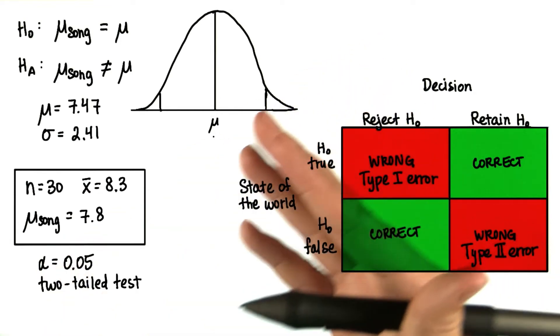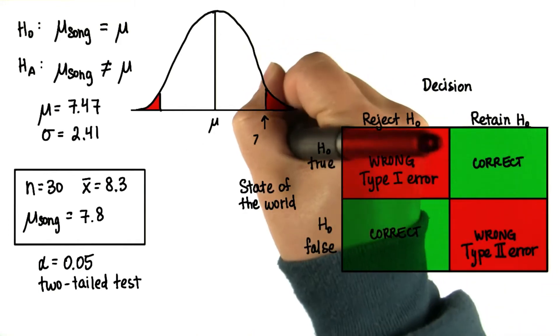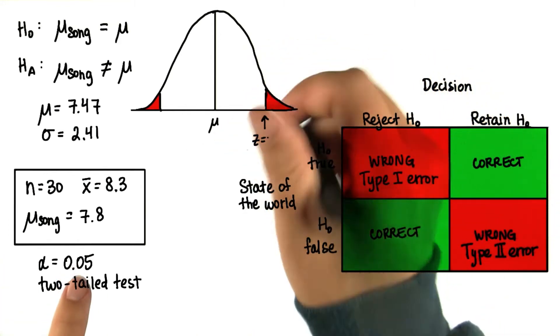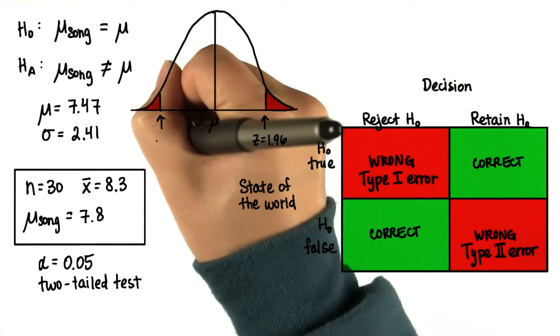We decide it's significantly different if it falls in the critical region. Remember that the z-score here for an alpha level of 0.05 is 1.96 and negative 1.96.